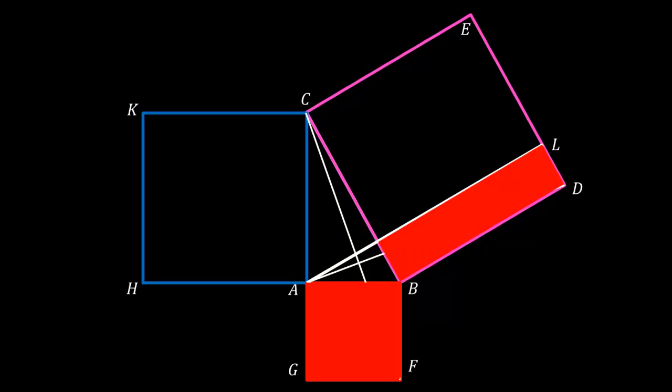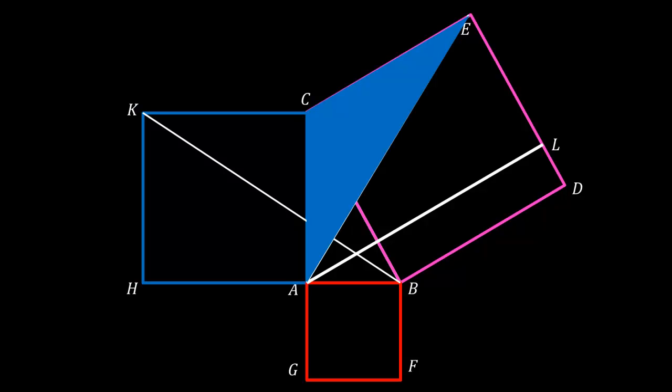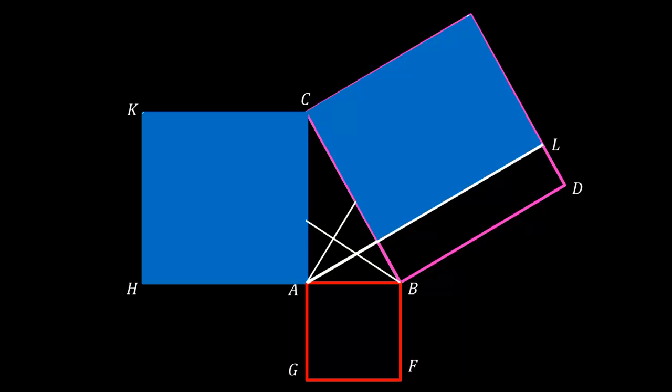So that means, because the two triangles are equal, that the area of the rectangle BL is the same as the area of the square BG. We can then use the same method by drawing these lines to show that this triangle is equal to this triangle. Similarly, this allows us to show that the areas of these two parallelograms are equal.